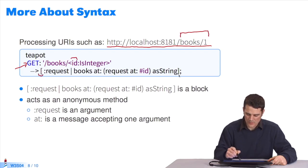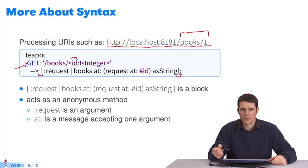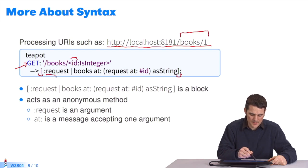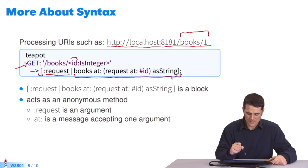Remember that a block starts and ends with brackets. So it's an anonymous method which can take a parameter. In this case, the parameter is called request and it is separated by a vertical bar. Next, the body of the block is all here. So you send the message at to the object books. What book do you want in the book collection? You want the book whose ID was passed as parameter in the URL. I query the request, the variable here is the parameter of the block defined in the beginning. I get the element called ID in this request. I convert this element into a string. This allows me to get the book one.